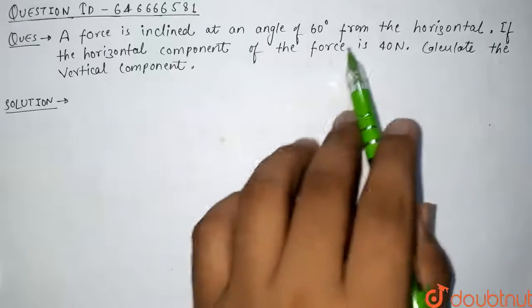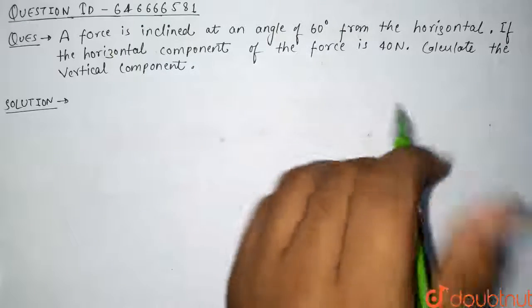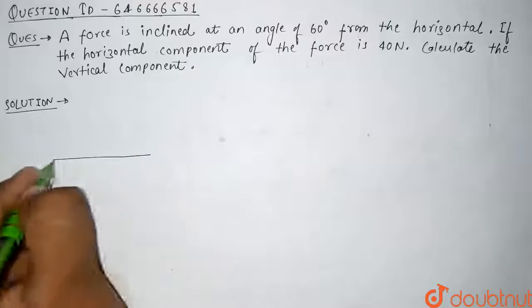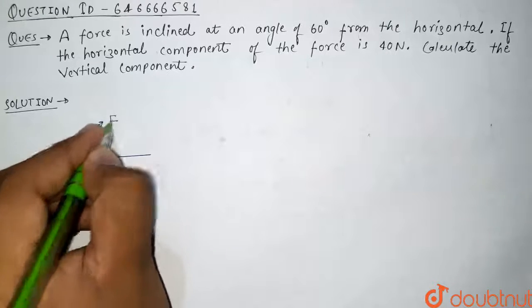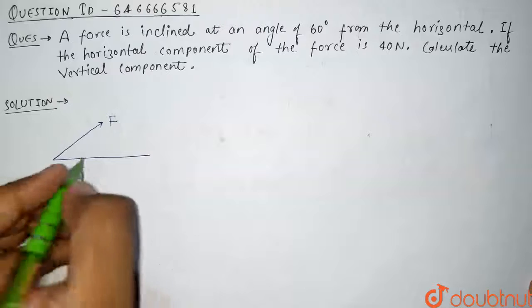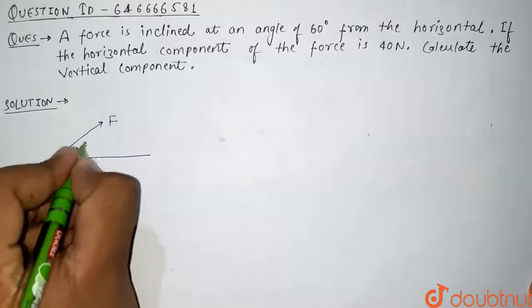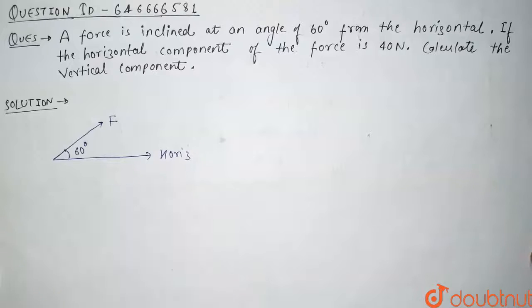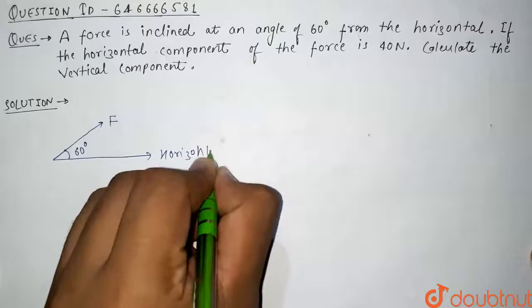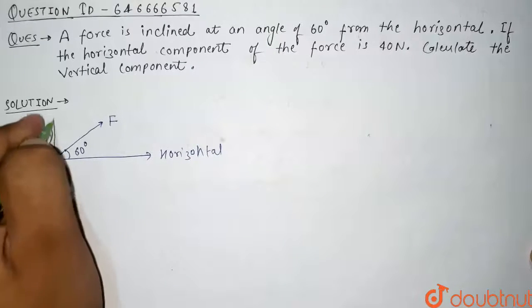So guys, in this question we have been given that force is inclined at an angle of 60 degrees from the horizontal. So this is our horizontal, and the force is inclined like this. This is our force F, and it is making an angle of 60 degrees from the horizontal. This is our horizontal and this is vertical.